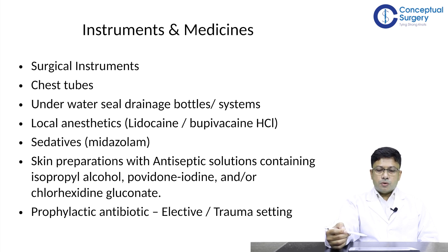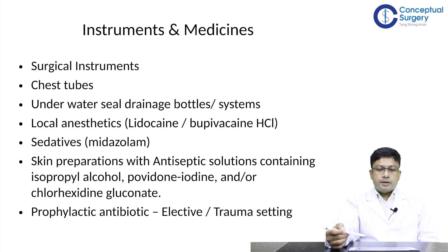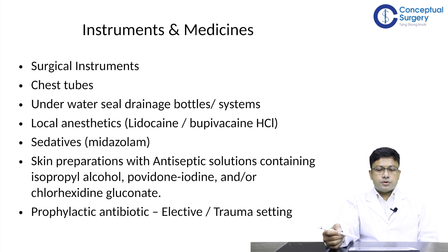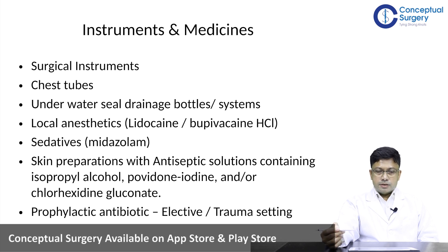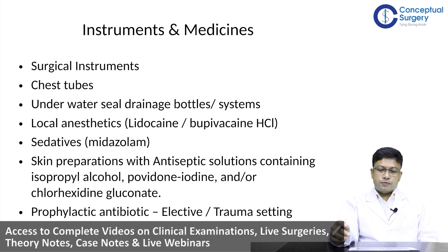All necessary instruments, surgical tubes, and drainage bottles must be checked before commencing the procedure. Local anesthetic solutions — typically 2% lidocaine — and IV anxiolytic drugs should be available. Skin preparation solutions such as povidone-iodine or chlorhexidine gluconate should be ready. In both elective and traumatic chest tube placements, IV antibiotics are given prior to insertion.